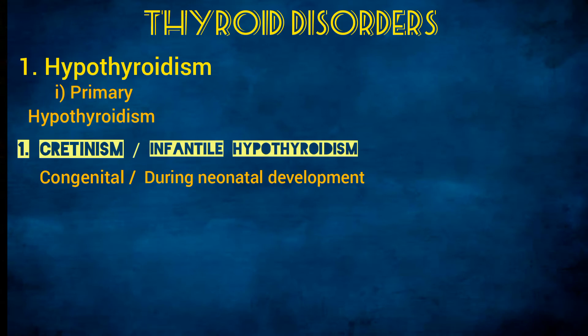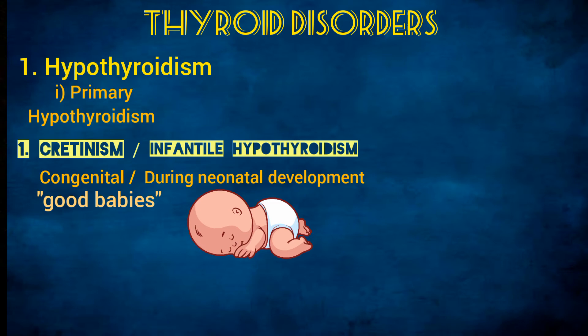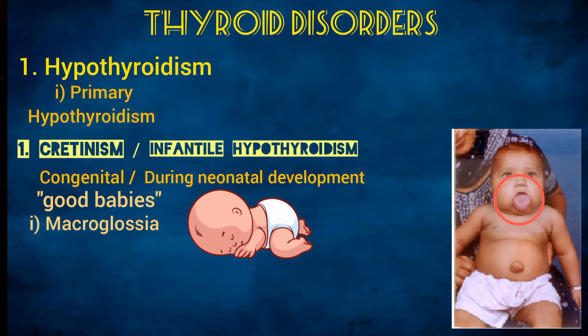Infants born with hypothyroidism are often described as good babies because they rarely cry and sleep most of the time. Clinically they have macroglossia, which is an enlarged tongue. This occurs because in hypothyroidism there is deposition of mucopolysaccharides in the tissues, which pull fluid and cause edema; when this occurs in the tongue it results in macroglossia.